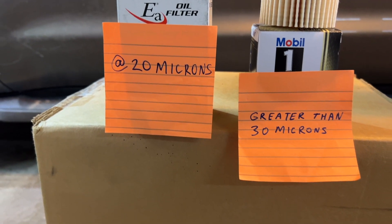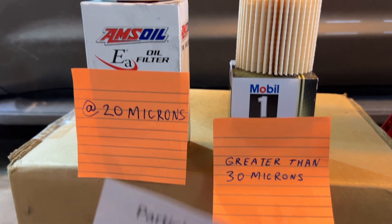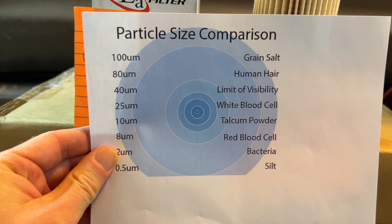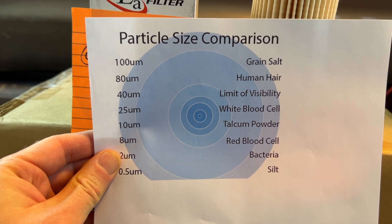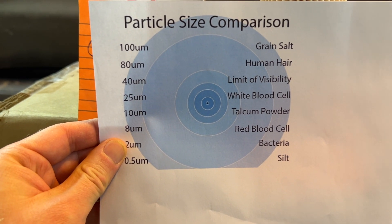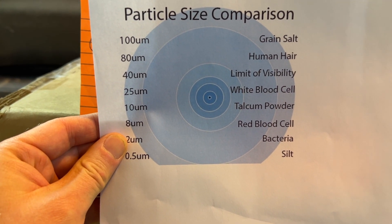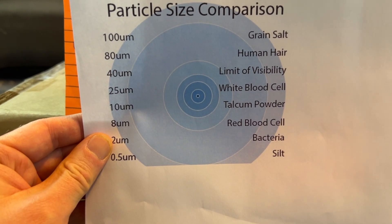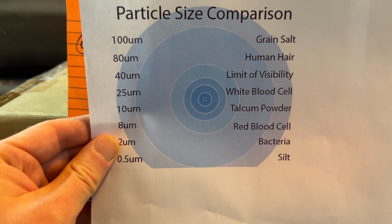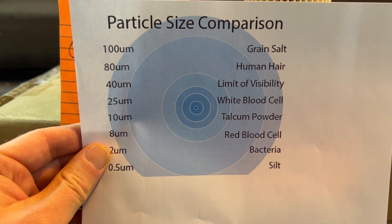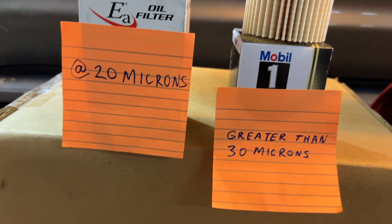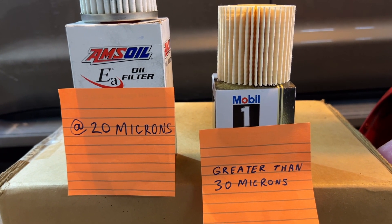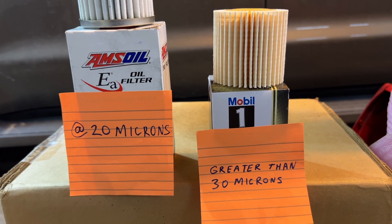How big is 20 microns? To have a better visual understanding: human hair is 80 microns — it's thin. Imagine all those particles in your oil not being trapped by the filter. Talcum powder is 10 microns. White blood cells are 25 microns. So the smaller the micron rating of the filter, the better job it can do. The longer the life of the engine will be — due to 20 versus 40 microns, or 'greater than 30.'